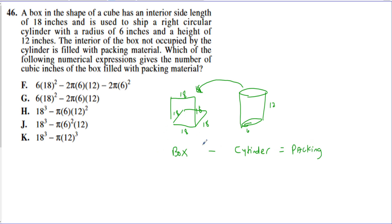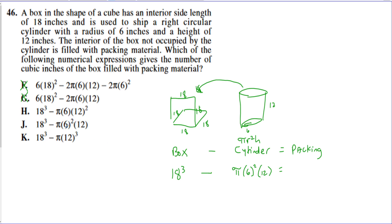This is a formula sheet problem. The volume of the cube is side cubed, which is 18 to the third power — 18 times 18 times 18. From that, subtract the cylinder's volume, which is pi r squared h. With r equals 6 and height equals 12, the expression is 18 cubed minus pi times 6 squared times 12. Looking at the choices, that matches choice J: side cubed minus pi r squared h.